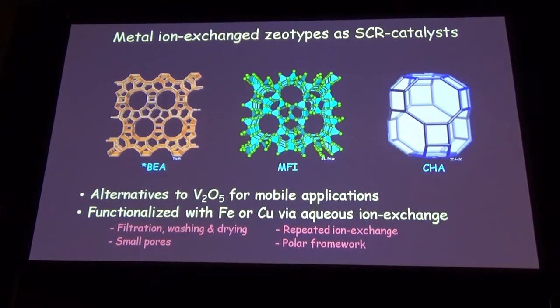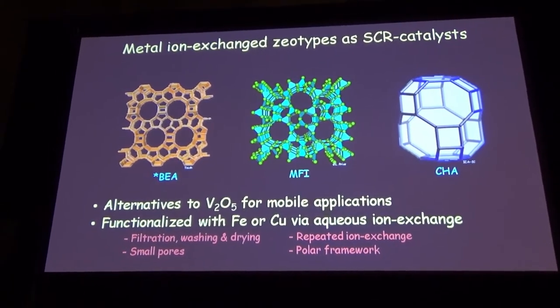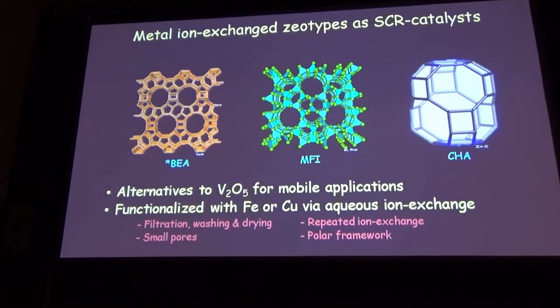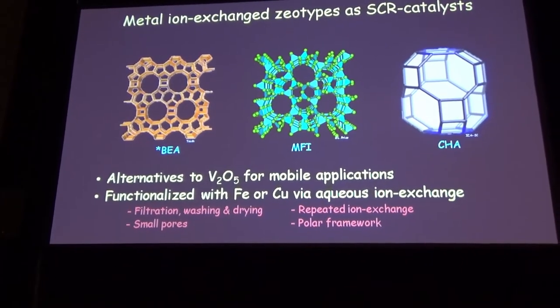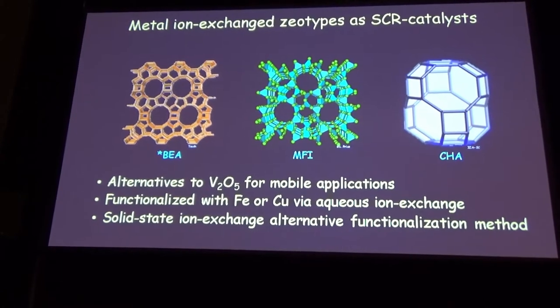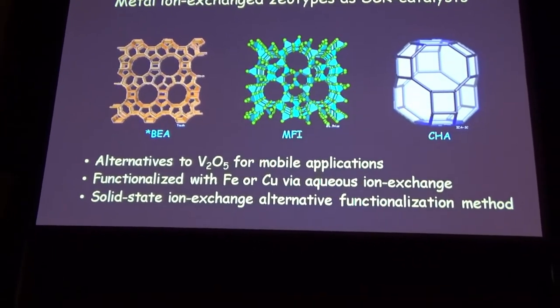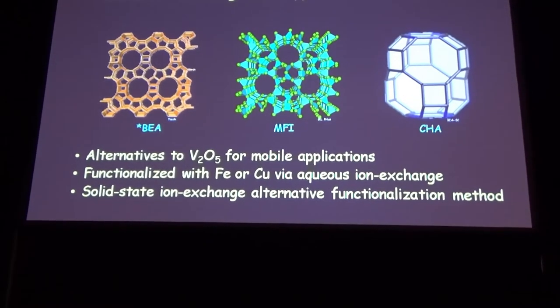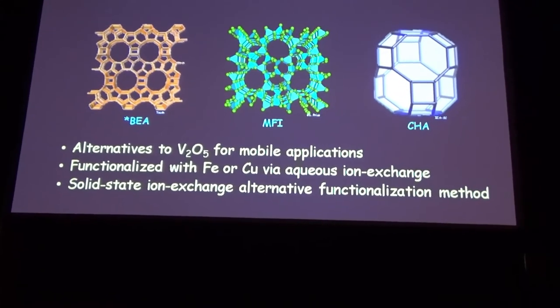For small-pore zeolites, like the Chabazite structure, the process can sometimes be hindered by the small pores. Also for polar frameworks like SAPO-34, it can be quite hard to get ions in via aqueous ion exchange. There are alternative methods, and one alternative is solid-state ion exchange, which can be done without aqueous solution but requires high temperatures—typically 800 degrees Celsius—which can be drastic for the zeolite structure, which might collapse. Some zeolites like Chabazite or SSZ-13 are really stable, but it can cause damage.